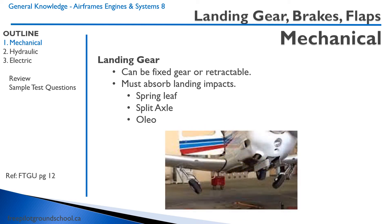Here's an example of a retractable landing gear. The main landing gear folds into the wing, and the nose gear folds into the engine compartment. You can see this aircraft has oleos — the nose gear and both main gears have oleos, similar to a shock absorber, used for absorbing the forces associated with landing.